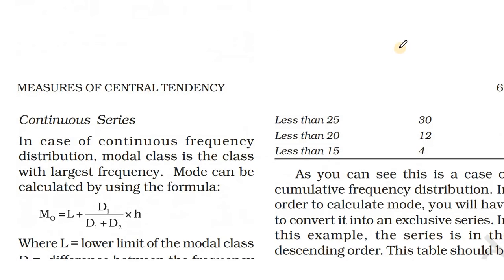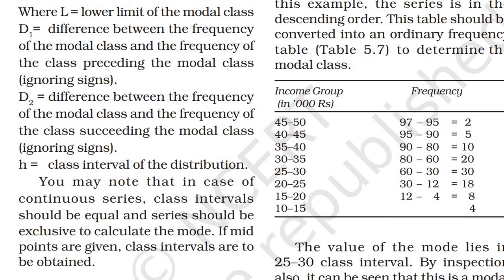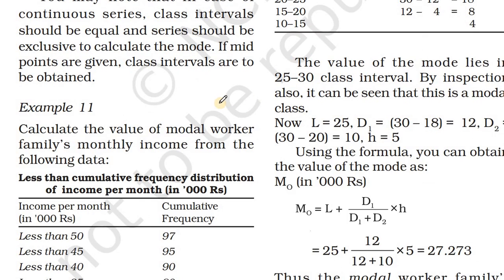What is the equation for finding the mode in a continuous series? M0 equal to L plus D1 divided by (D1 plus D2) into H. Here, L is the lower limit of the modal class. D1 is the difference between the frequency of the modal class and the frequency of the class preceding the modal class (ignoring the sign). D2 is the difference between the frequency of the modal class and the succeeding class. H is the class interval.